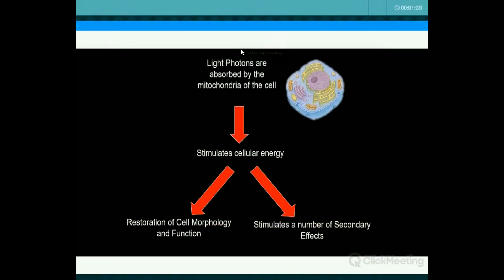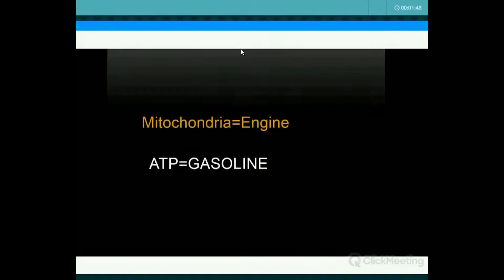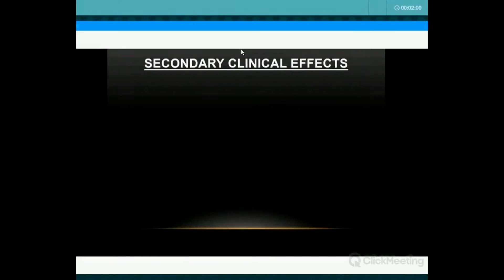Light is absorbed by the mitochondria of the cell. It stimulates cellular energy and produces ATP, and what you get is restoration of the cell morphology and function. It stimulates a number of secondary effects. Think of the mitochondria like a car — that's the engine. The ATP produced in those mitochondria is the gasoline; that's what's driving our body. The light produces more ATP, which makes functions work for our body. With that, we get a number of secondary effects.